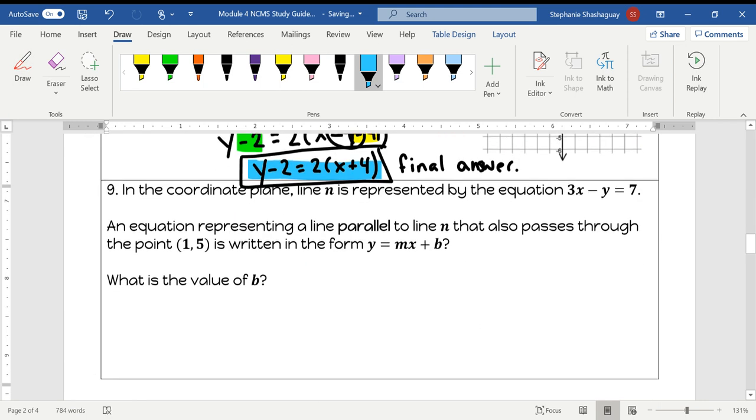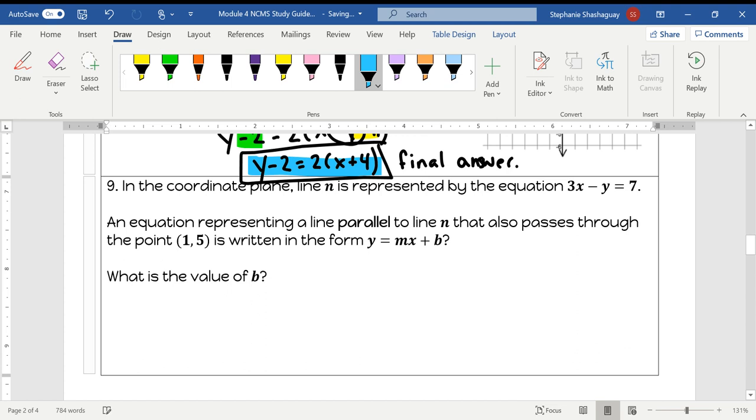Okay, moving on to question 9. In the coordinate plane, line N is represented by the equation 3X minus Y is equal to 7. We need to write an equation of a line that is parallel to line N and passes through the point 1, 5. So again, this is my X, this is my Y.